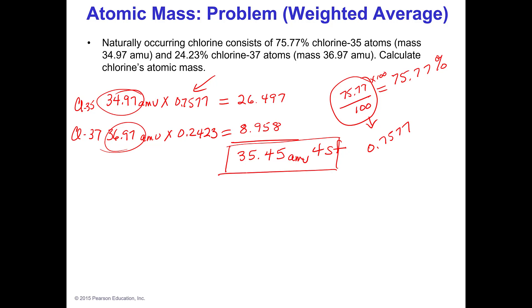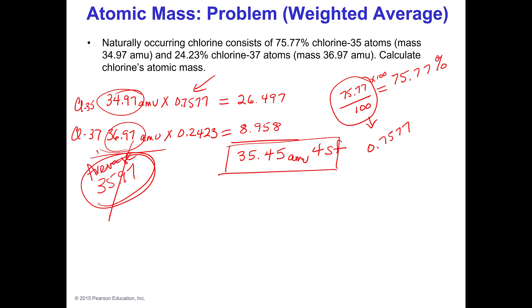So 35.45 amu is the average, and if you look on your periodic table you'll probably see 35.45. That's how we come up with those numbers. It's not a straight average — if it were, I'd add the two masses together and get 35.97. I can't do a straight average because it's not 50-50. If it were 50 percent of each I could, but when it's not, I have to take the abundance into account.